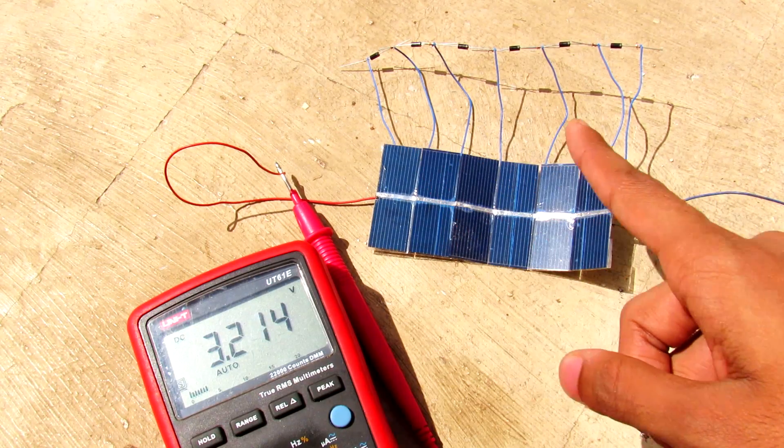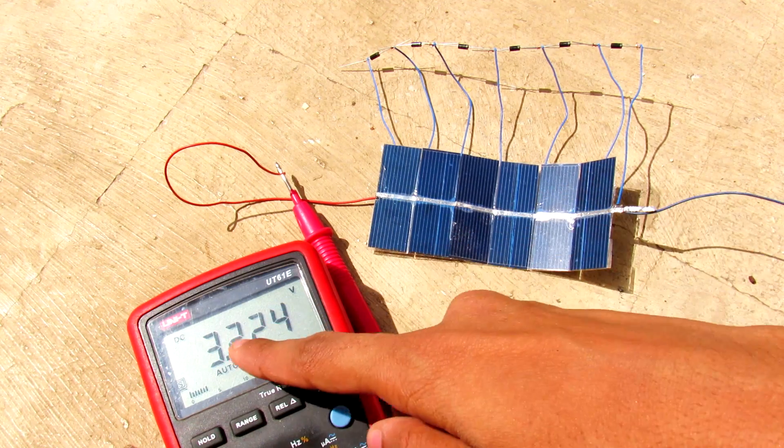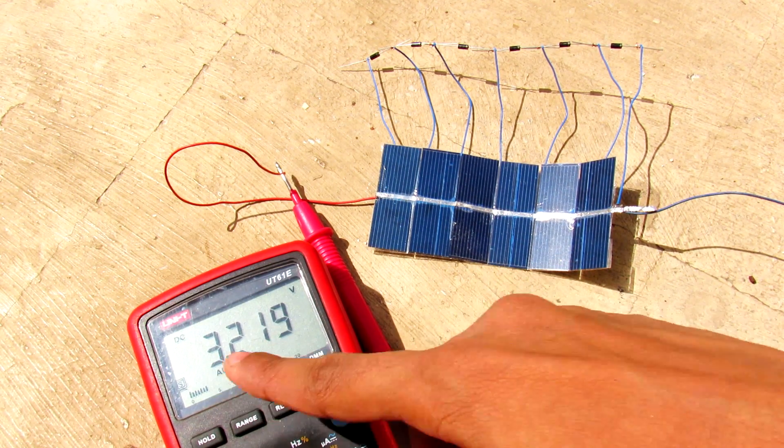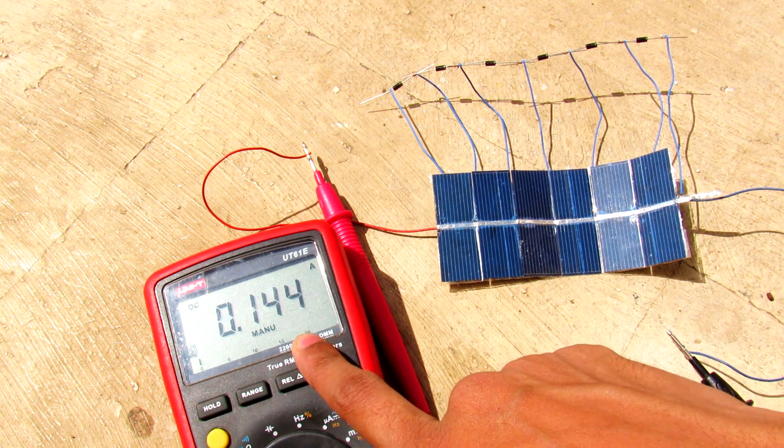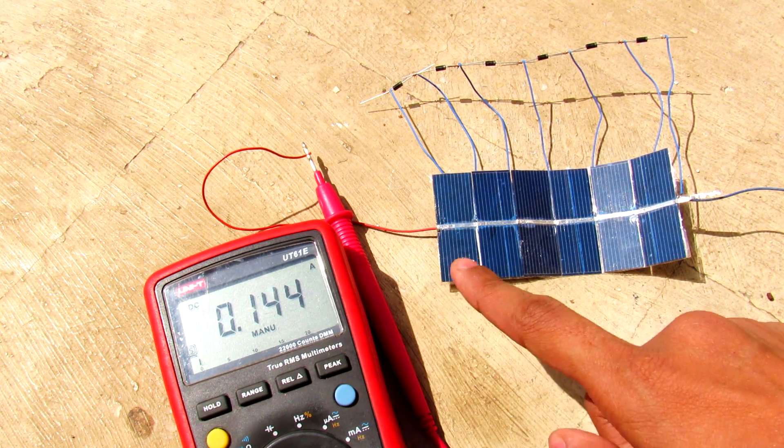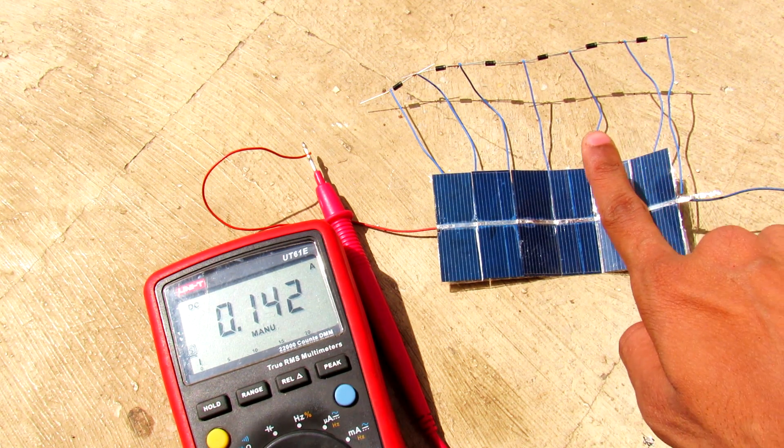So all diodes are connected to each solar cell individually, and you can see the open circuit voltage there which is 3.2 volts. And this time we are getting 144 milliamps of short circuit current. So let me cover one of the cells and you will see there is less drop in the current.